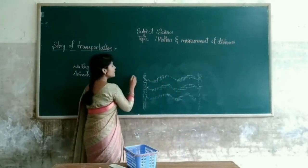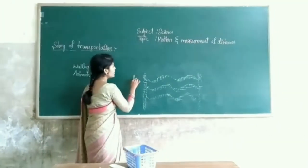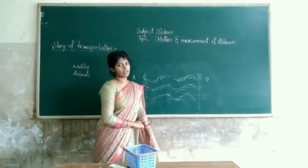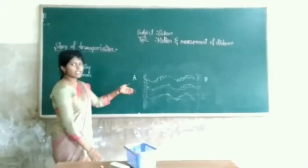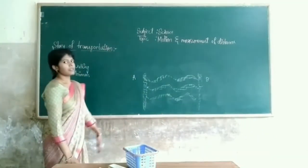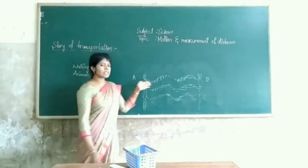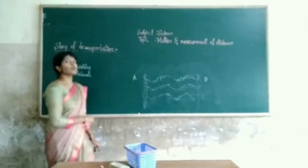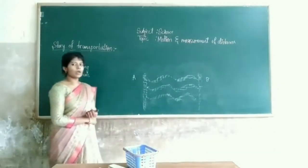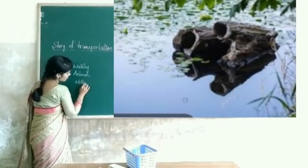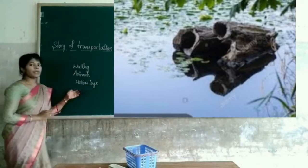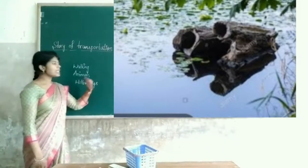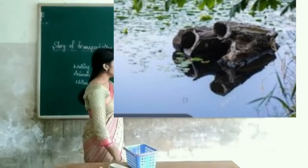Now here we have a group of people at point A. They are wanting to reach point B. How can they cross the river? If they walk in the water, it is quite difficult to cross the river. If they use animals, animals can also walk inside water, but it is also difficult. Then they started using hollow logs. Hollow logs are wooden pieces which help people go from one point to another point through water.